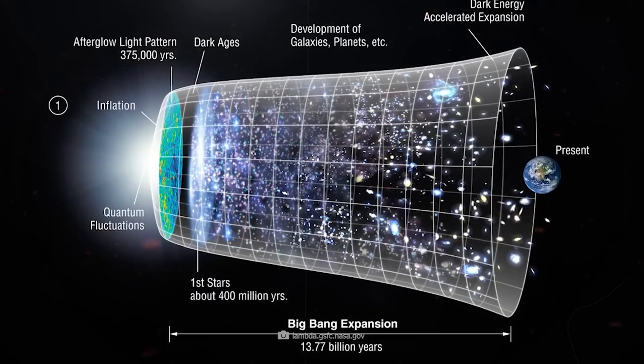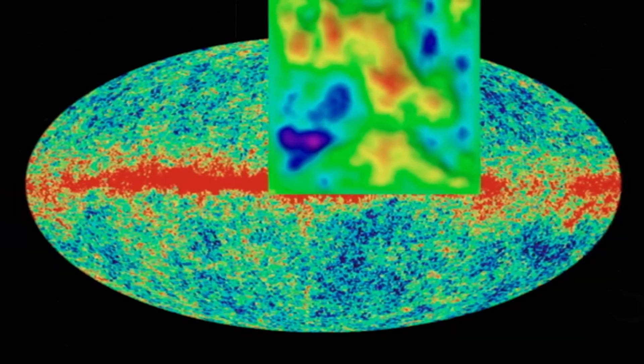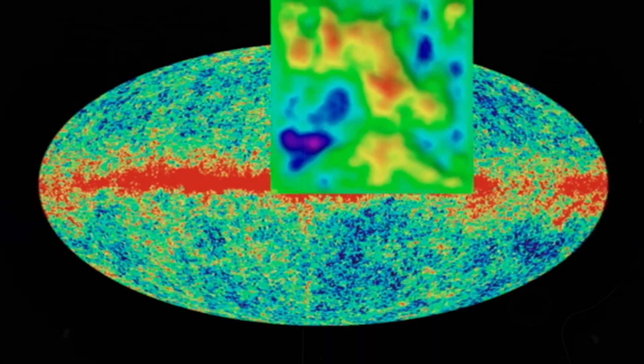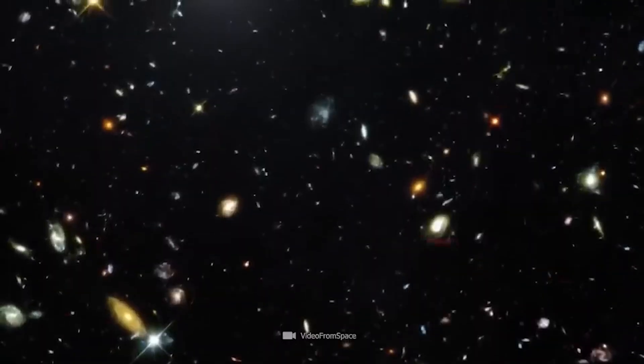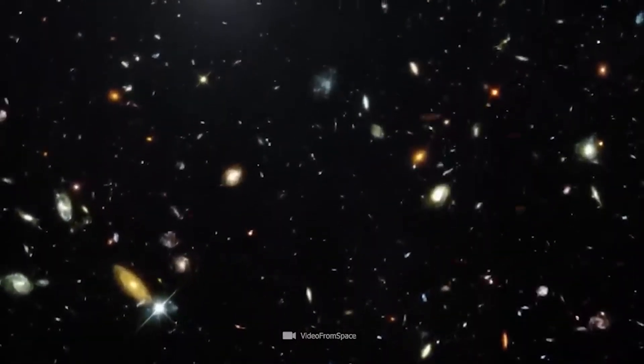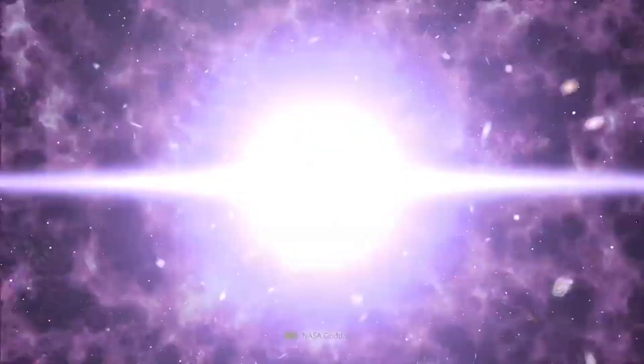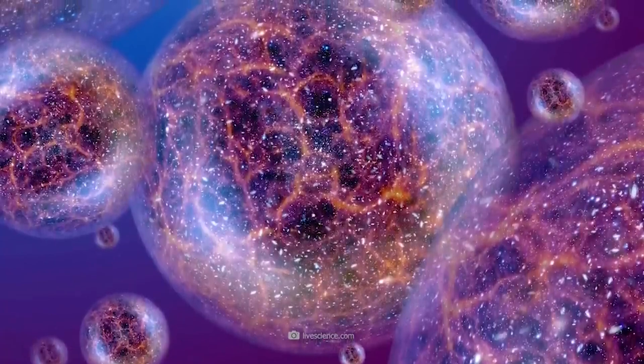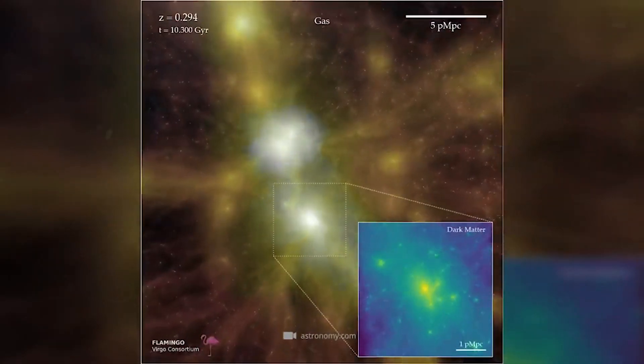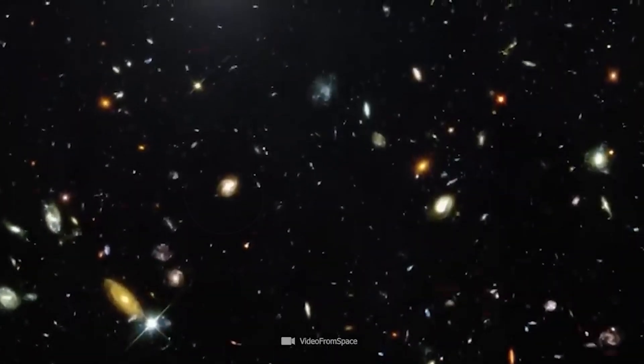The cosmic microwave background radiation, considered the afterglow of the Big Bang, shows a remarkably uniform distribution of matter. This radiation originated around 380,000 years after the Big Bang during a period known as recombination. At this time, the universe had cooled enough for protons and electrons to form neutral hydrogen atoms. Prior to this, the universe was a dense plasma where particles constantly interact, scattering photons and keeping matter and radiation closely linked.